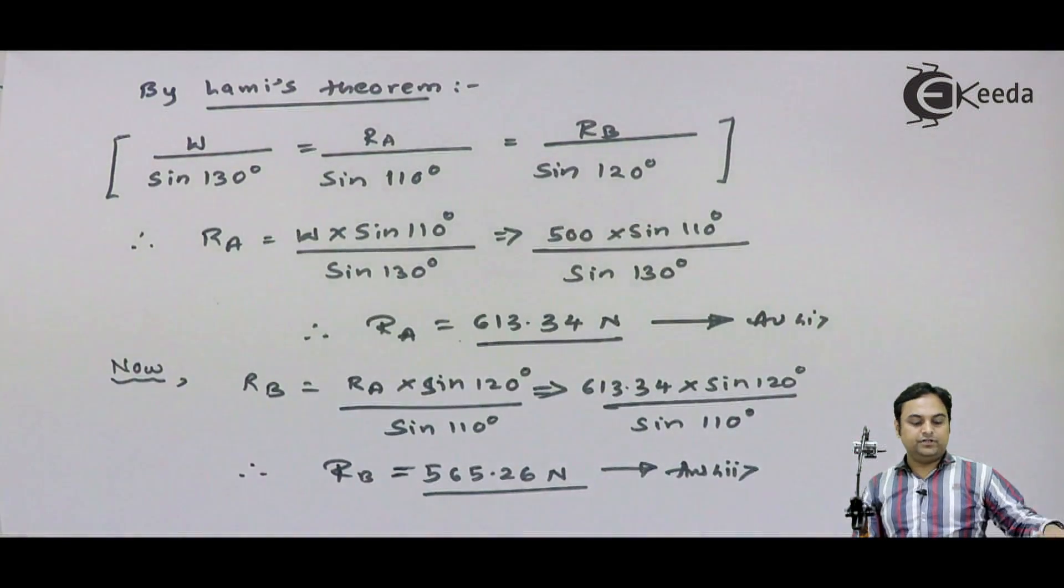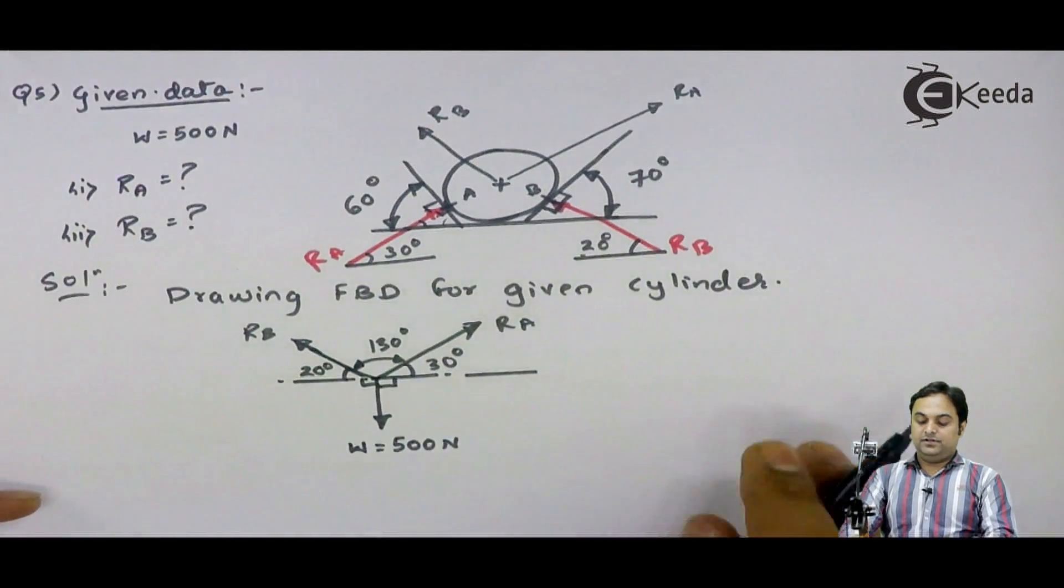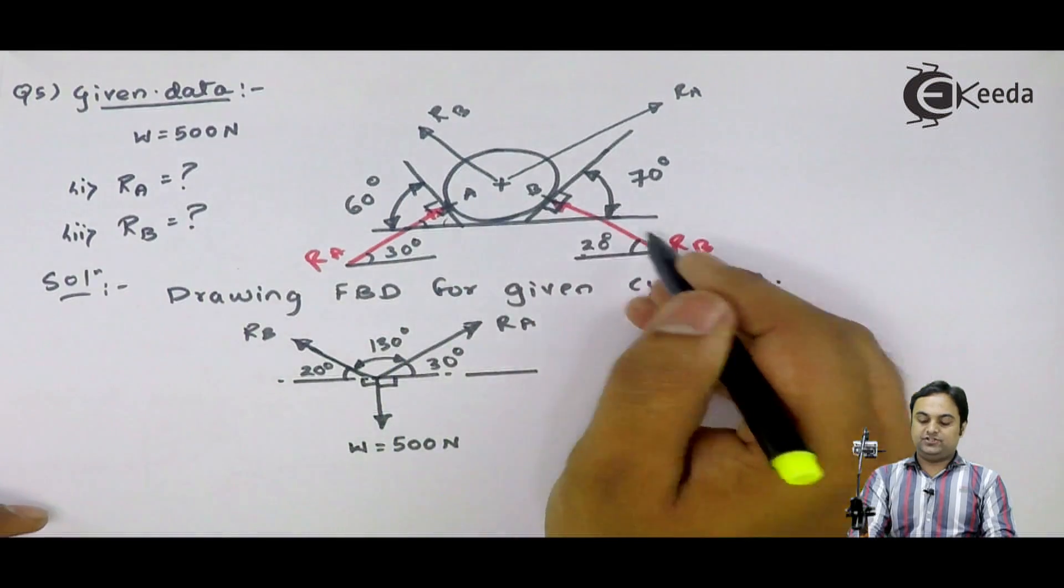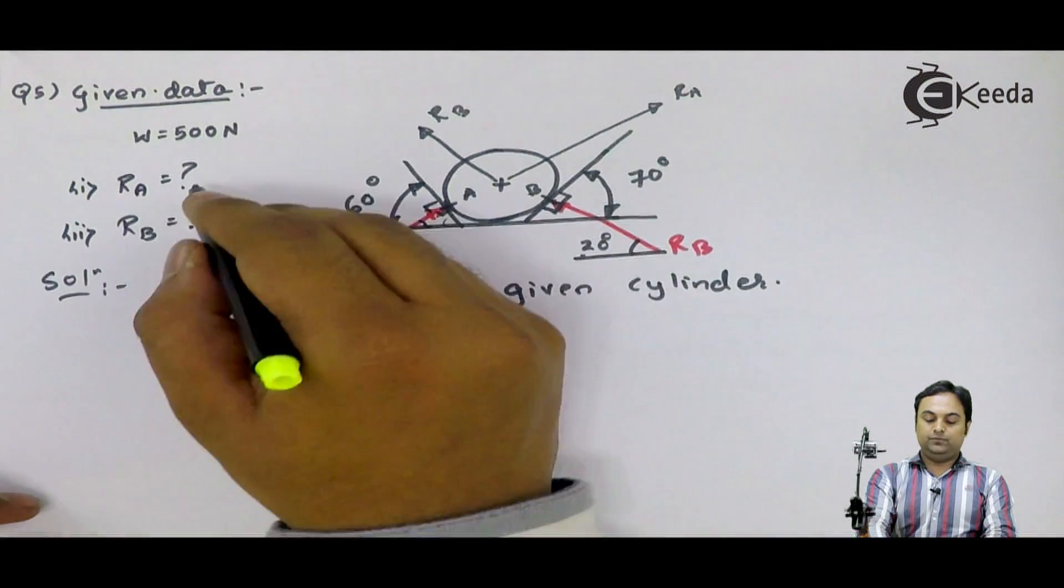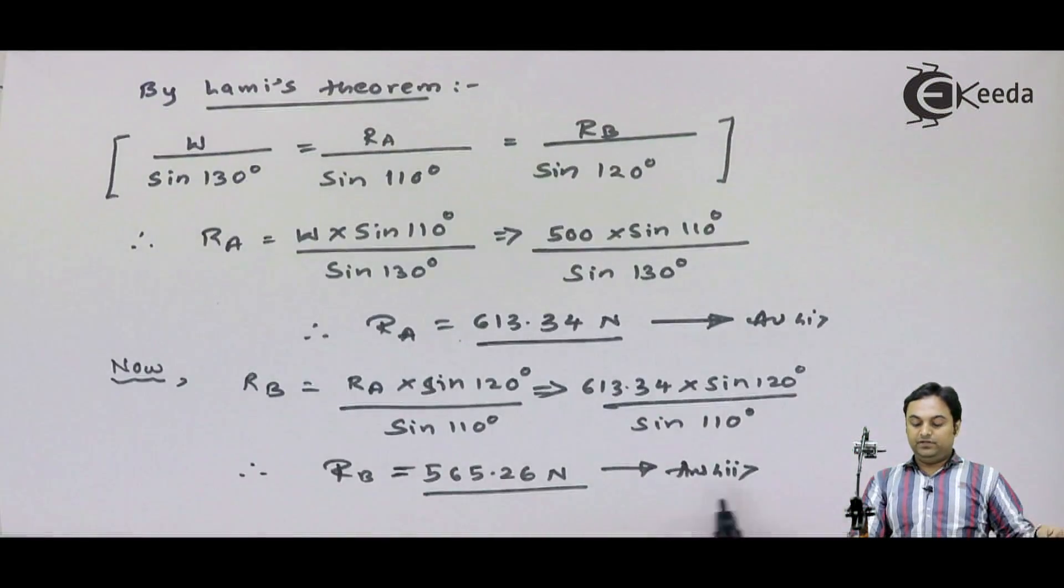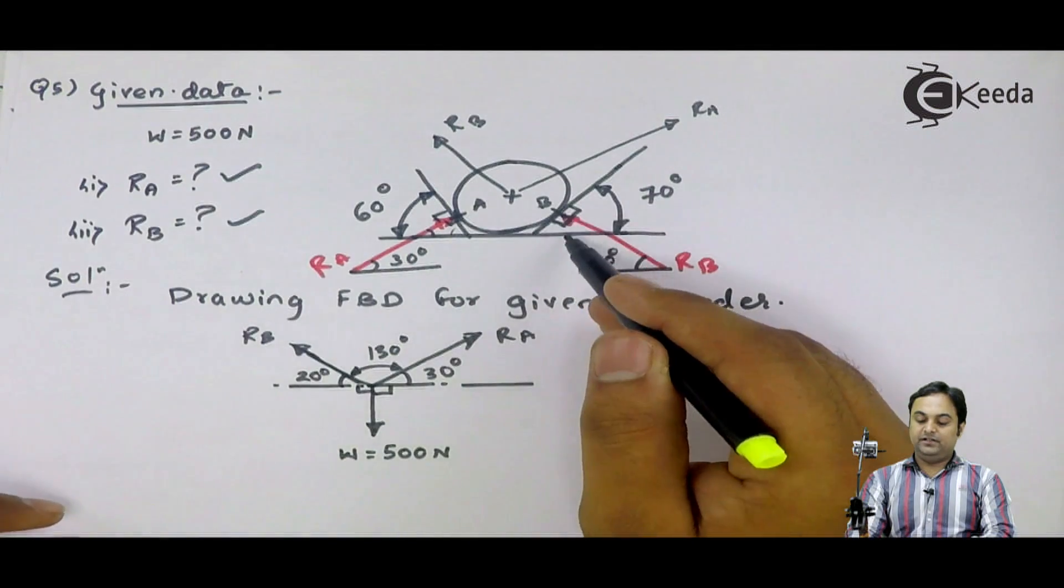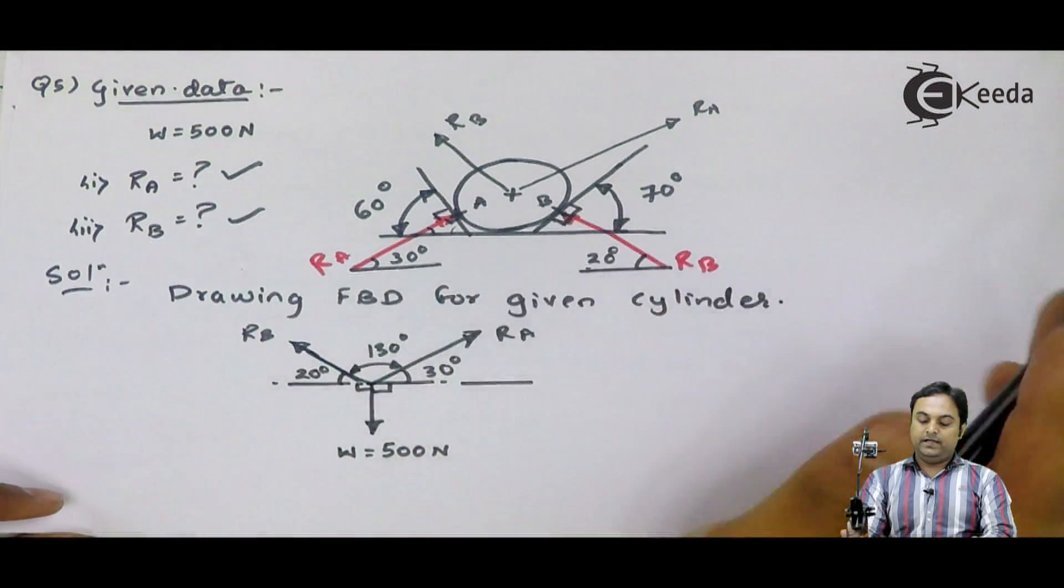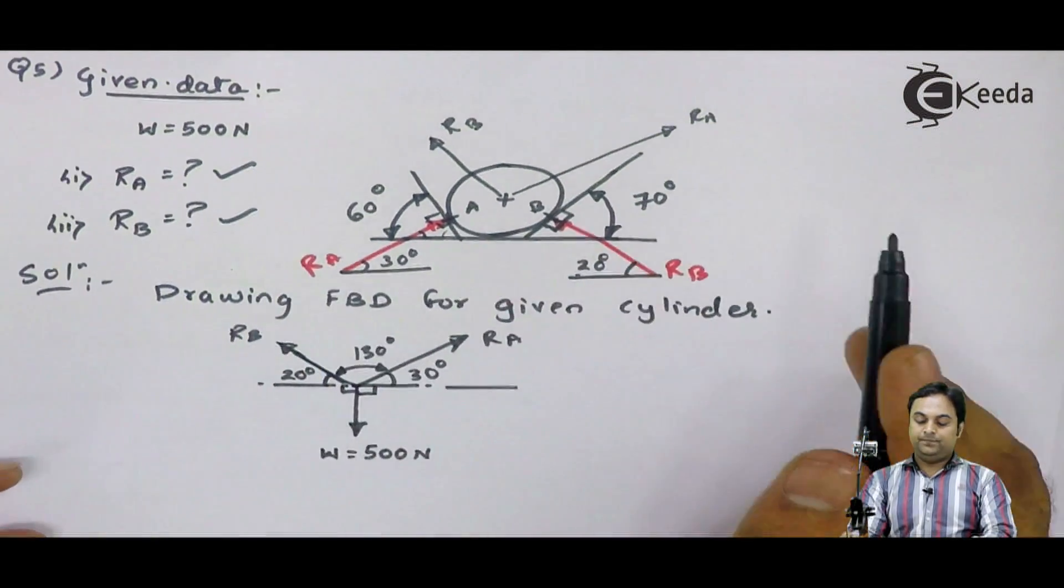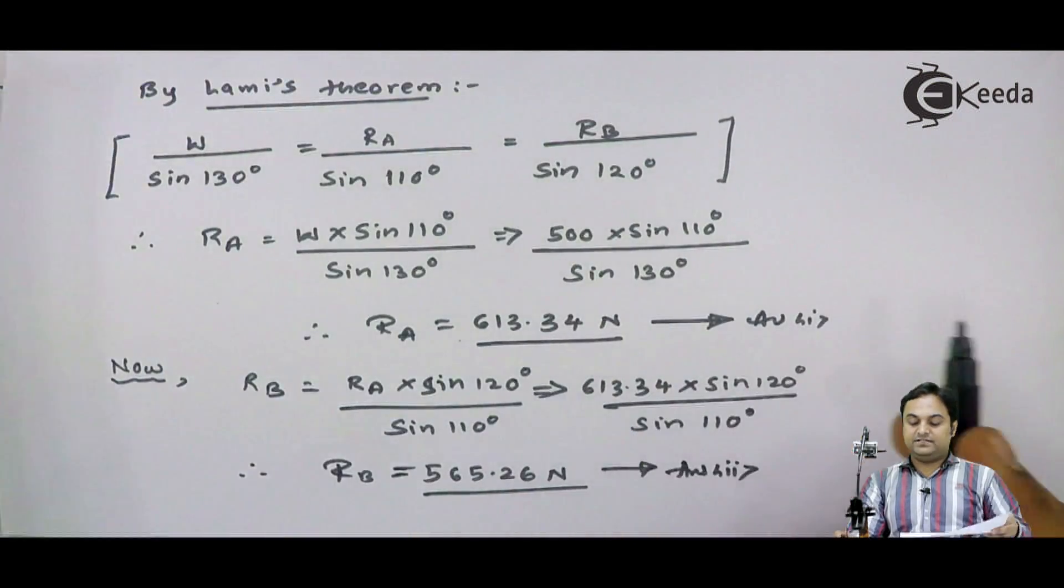If I look into this question, there were two things asked, reaction at point A, reaction at point B, and we have got both the values. And you can even say that, reaction at A is greater, it means the reaction at 70 degree inclined plane is more... Okay, reaction at A is greater.